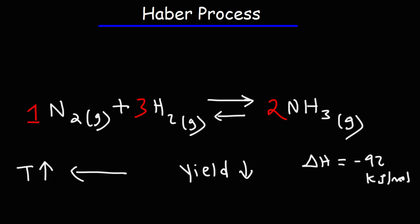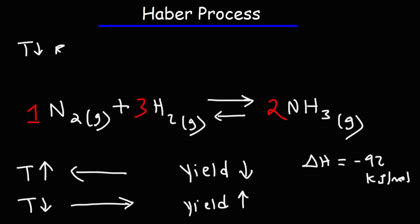Now if you're a manufacturer of ammonia, you want to increase the yield, not decrease it. So high temperatures are not the best thing for this reaction — it doesn't favor the formation of ammonia. Decreasing the temperature, on the other hand, is going to drive the reaction to the right and increase the yield of ammonia. However, there's a problem: the rate of the reaction is temperature dependent. If you decrease the temperature, the reaction is going to proceed a lot slower, which is a problem. You want to get the greatest yield for this reaction, but you also want this reaction to occur at a fairly rapid rate.